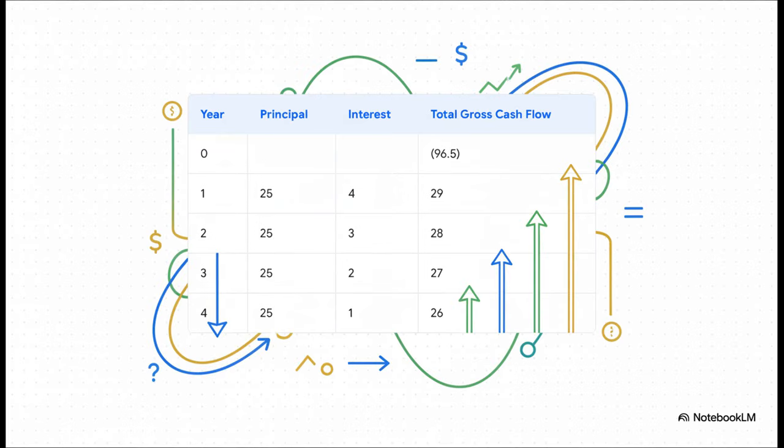So here it is, the full pre-tax picture. We've just added the principal and the interest together for each year. We pay out 96.5, and in return, we get this stream of payments: 29, then 28, 27, and finally 26. So now we have the complete cash flow. The big question is, what actual rate of return do all these payments represent?